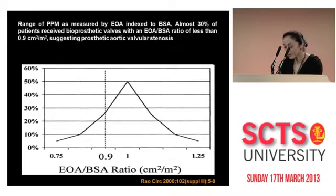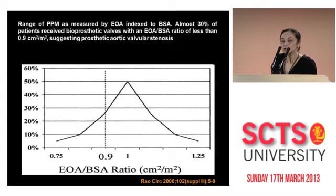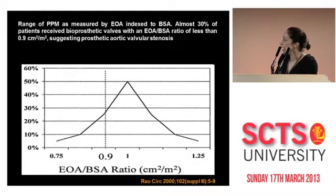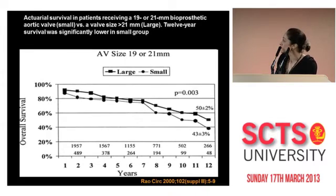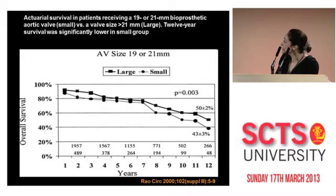One of these studies was by Dr. Rao, Dr. David, and colleagues, where they looked at over 3,000 patients who underwent aortic valve replacement. Of the 3,000 patients, one-third had some degree of mismatch, with a ratio of 0.9 and less. The square graph shows the larger valve and the round graph the smaller valve — 19 and 20 millimeters. There is a significant difference in survival. They followed patients up to 16 years, with a median of 8.